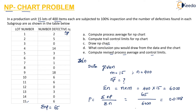So P̄ = 65 / 6000 = 0.0108. Now to find NP̄: NP̄ = n × P̄ = 400 × 0.0108 = 4.32.